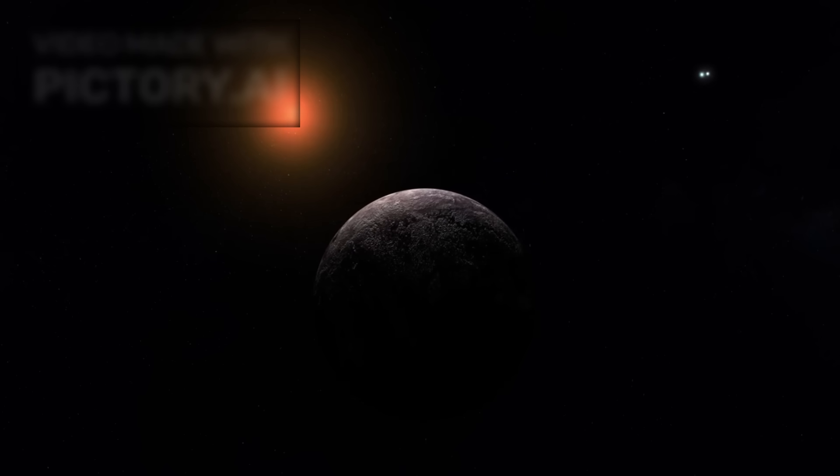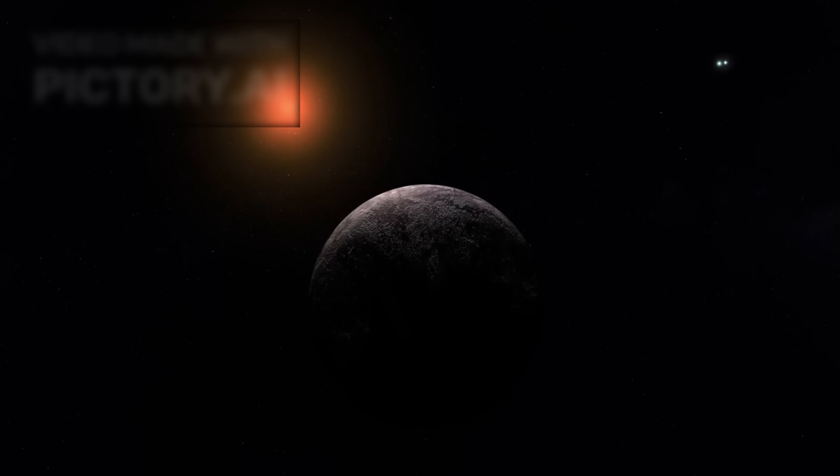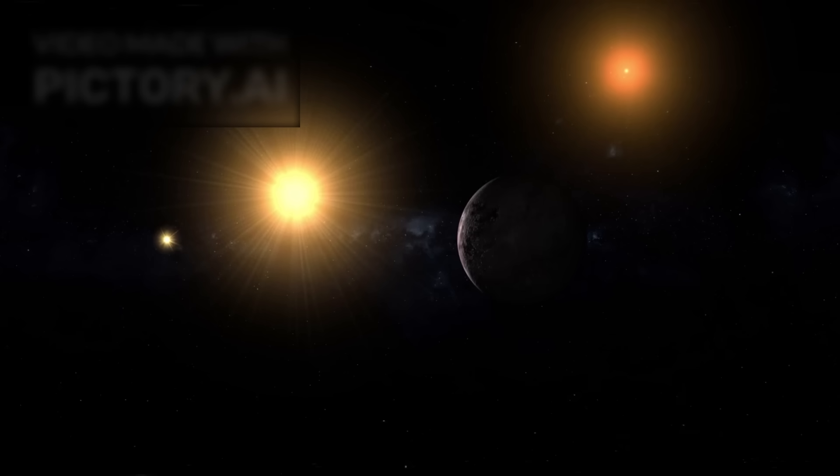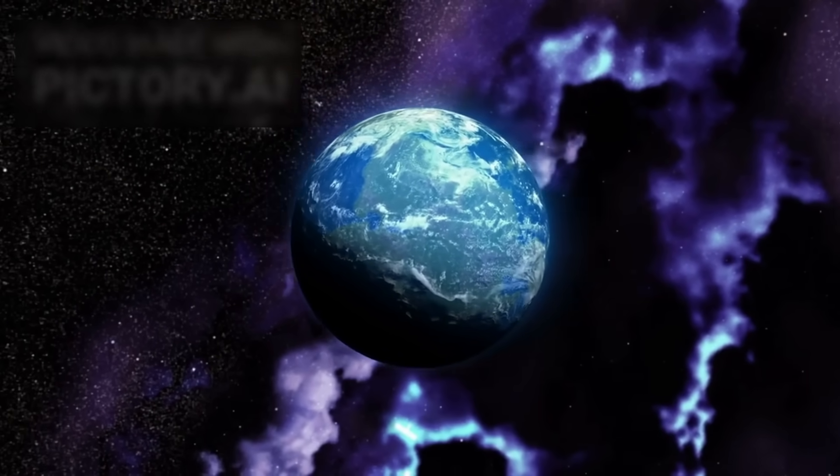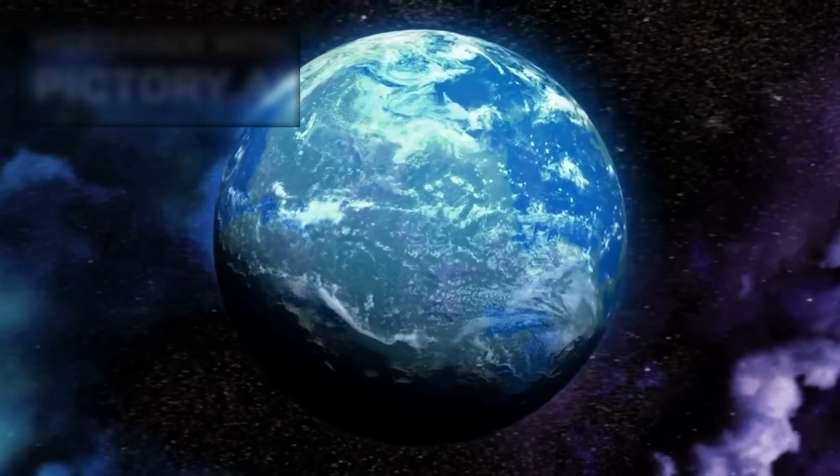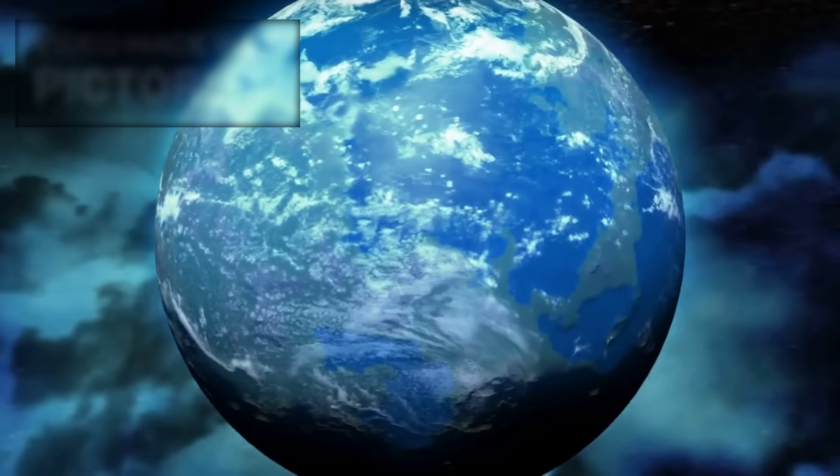Proxima Centauri b is an exoplanet orbiting Proxima Centauri, the closest star to our Sun, part of the Alpha Centauri system. The planet lies within the habitable zone, where temperatures could allow liquid water to exist. Scientists have long speculated that if any exoplanet in the near-cosmic neighborhood could harbor life, Proxima b is a prime candidate.